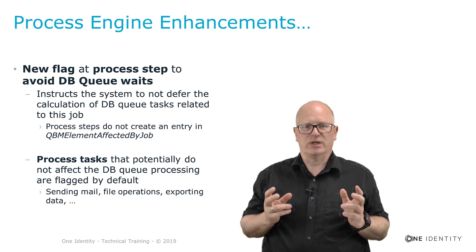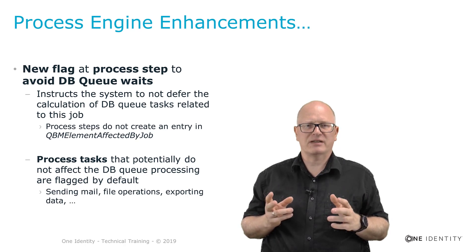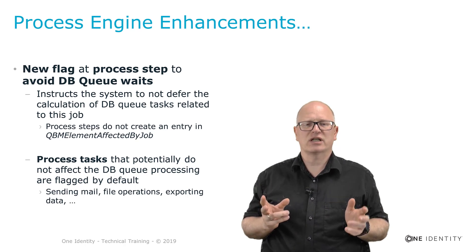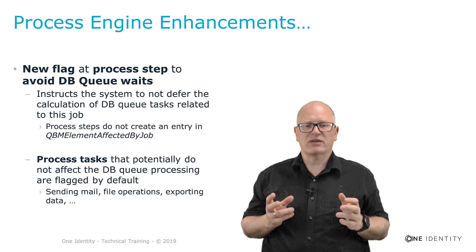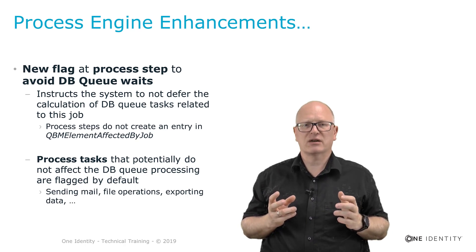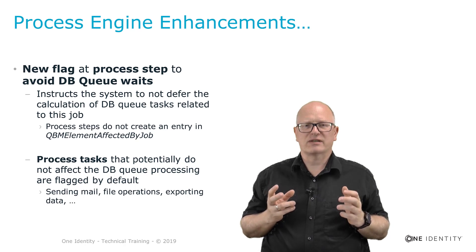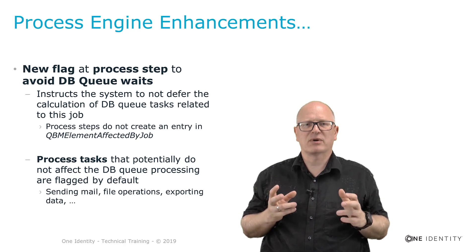In some cases this is pretty sensible, especially if these jobs are doing something in the database that should be considered with the calculation. In other cases, for example sending out emails or something else, this is not really necessary. Because of that, there is a new behavior implemented, which allows you to set a flag at the process step level to tell the system that this specific process step should not block something in the DB queue.